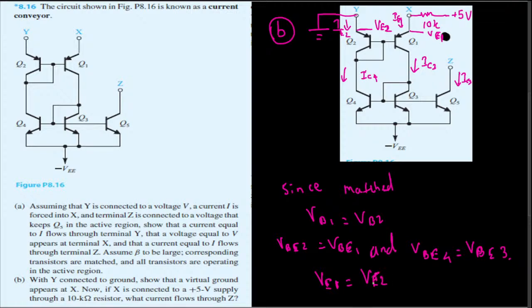Since Y is connected to ground, VE2 equals zero. Therefore VE1 also equals zero, which means there is a virtual ground appearing right here at this node - the voltage is zero. That proves the first part of the question.